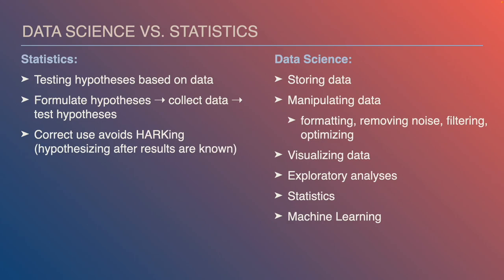Data science is not the same thing as statistics. In statistics, we're typically testing hypotheses based on data — we formulate hypotheses, collect the data, and then test those hypotheses. Using statistics correctly avoids what we call HARKing, or hypothesizing after results are known, which is unfortunately quite common in neuroscience, psychology, and other areas of research. The idea is we make predictions before we collect and look at the data, then we use statistics to test whether those predictions are correct.